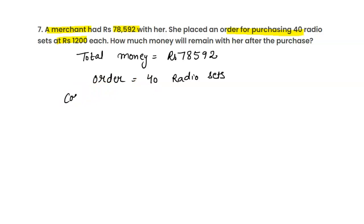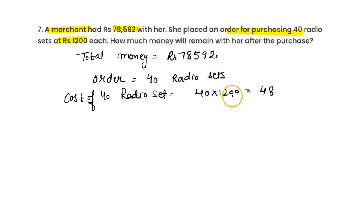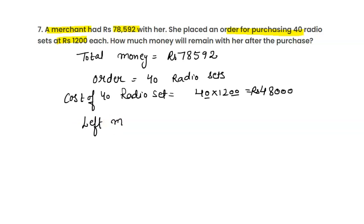Now, the cost of 40 radio sets: 40 multiplied by 1,200. That gives us 48,000 rupees.